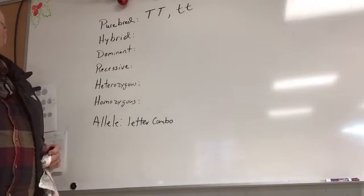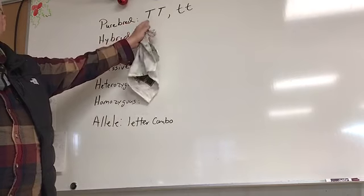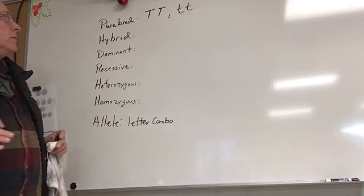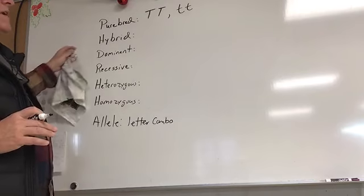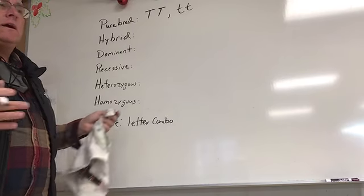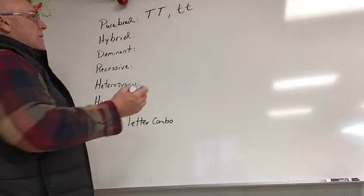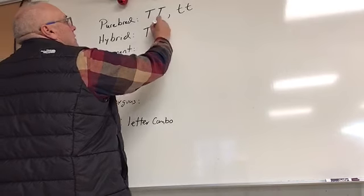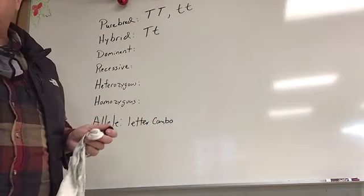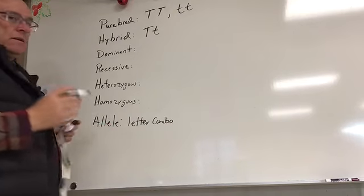Remember, the traits are what the alleles are coding for. When we have a hybrid, hybrid means a combination of a couple different things. In this case, the only hybrid we have is capital T lowercase t. Those are the genotypes — genotypes being the letter combinations of the trait we're looking at in the word problem.